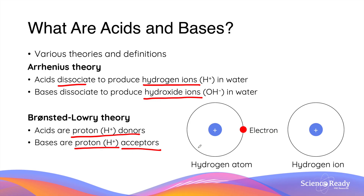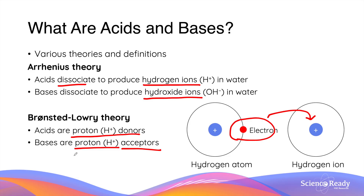In this context, protons are synonymous with hydrogen ions. This is because a hydrogen ion is produced when a hydrogen atom loses its only electron, leaving behind a proton in the nucleus. So essentially, you can understand Bronsted-Lowry acids as molecules that donate or give away hydrogen ions, and bases as molecules that receive hydrogen ions. However, despite the similarity, the term proton is usually used when using the Bronsted-Lowry theory.